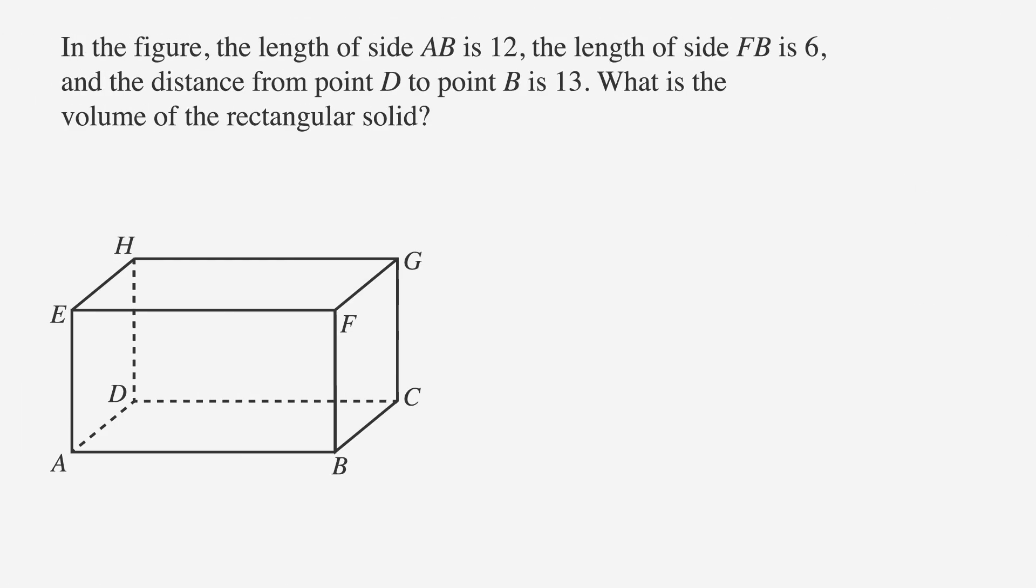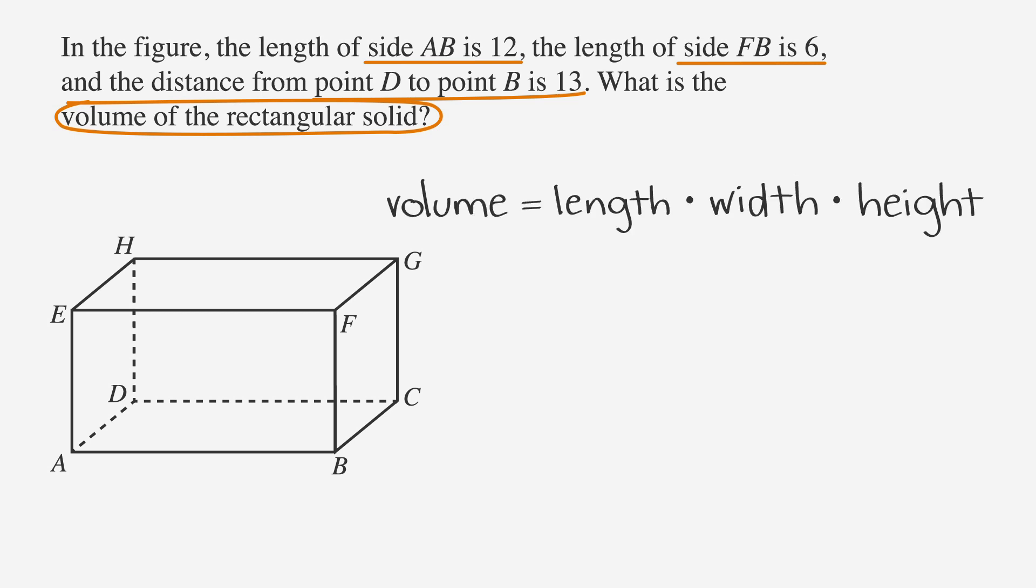In the figure, the length of side AB is 12, the length of side FB is 6, and the distance from point D to point B is 13. What is the volume of the rectangular solid? We'll underline the facts and circle the key terms. We're looking for the volume of the solid, which we know as length times width times height. First off, we need to label everything we know. So label the length of AB 12.